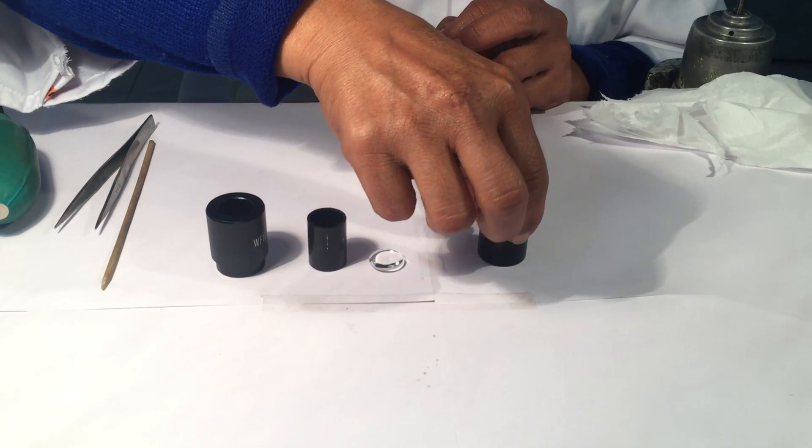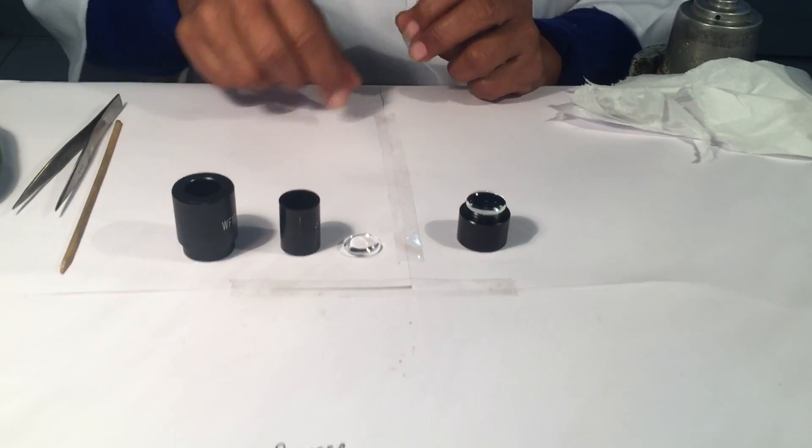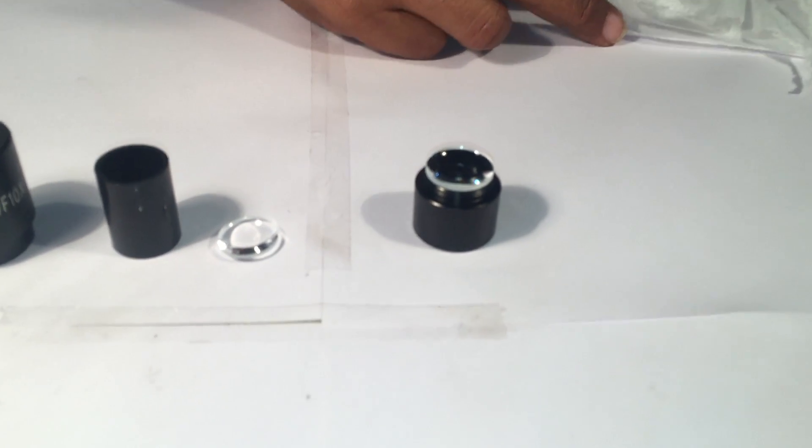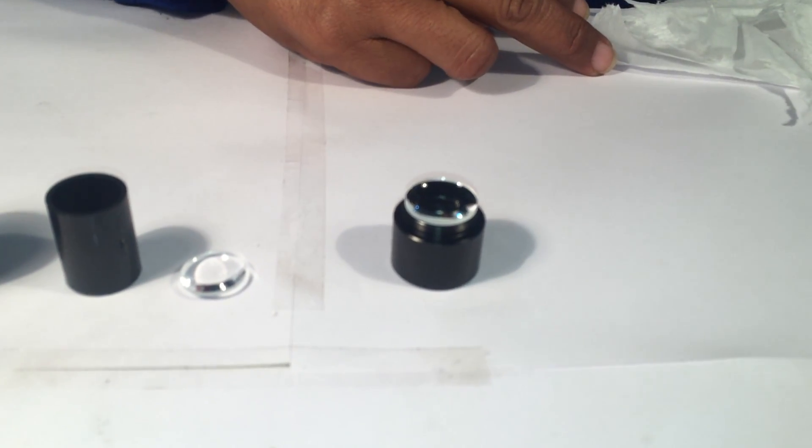The flat surface of the field lens should be on the upper side placed on the lower.